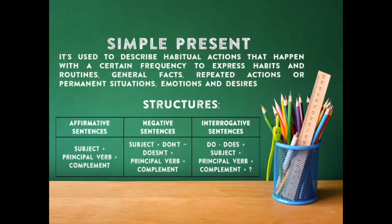Con las oraciones interrogativas o las preguntas, colocaríamos primero el do o el does dependiendo del sujeto. Recordemos: I, you, we, they trabajan con do; y she, he, it — terceras personas — con el does. Luego el sujeto, un verbo principal y un complemento, y el signo de interrogación.